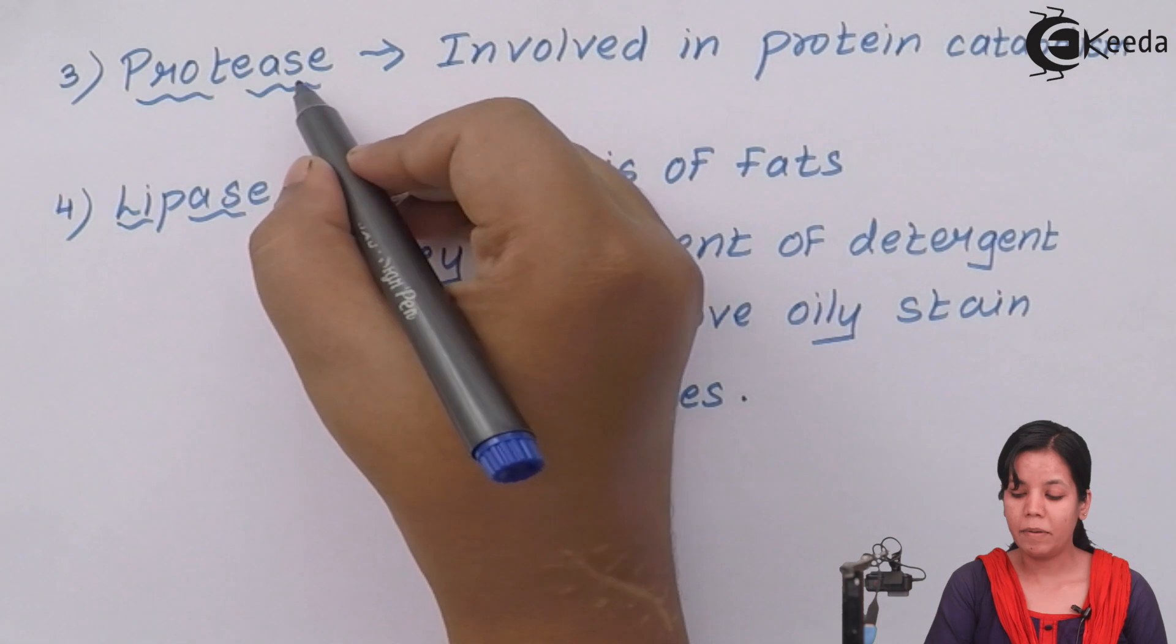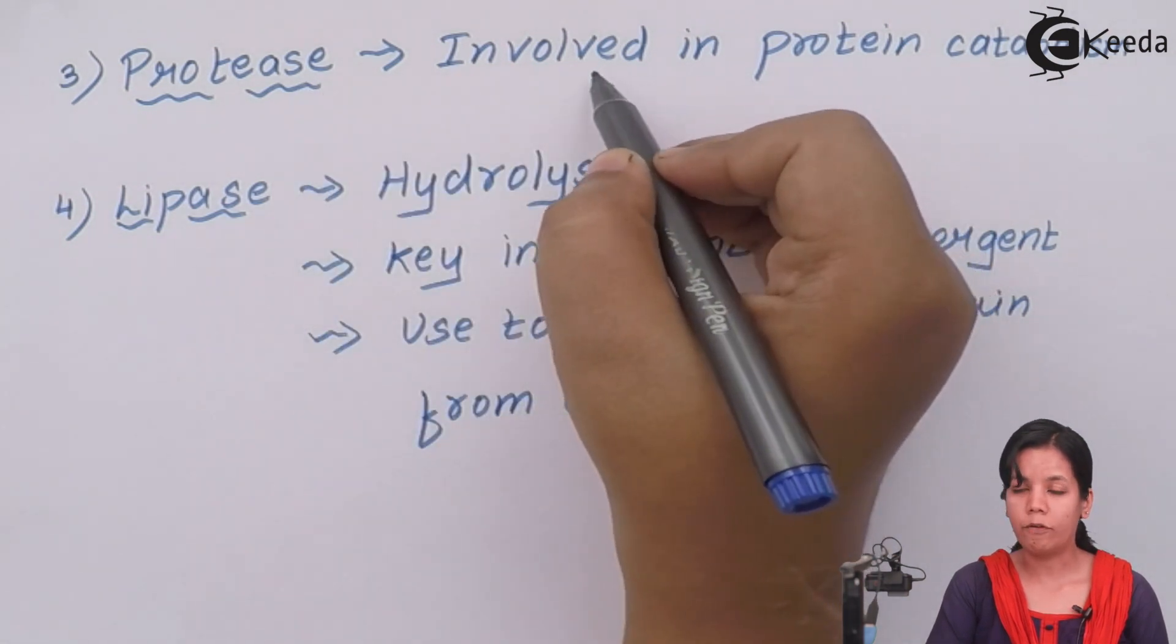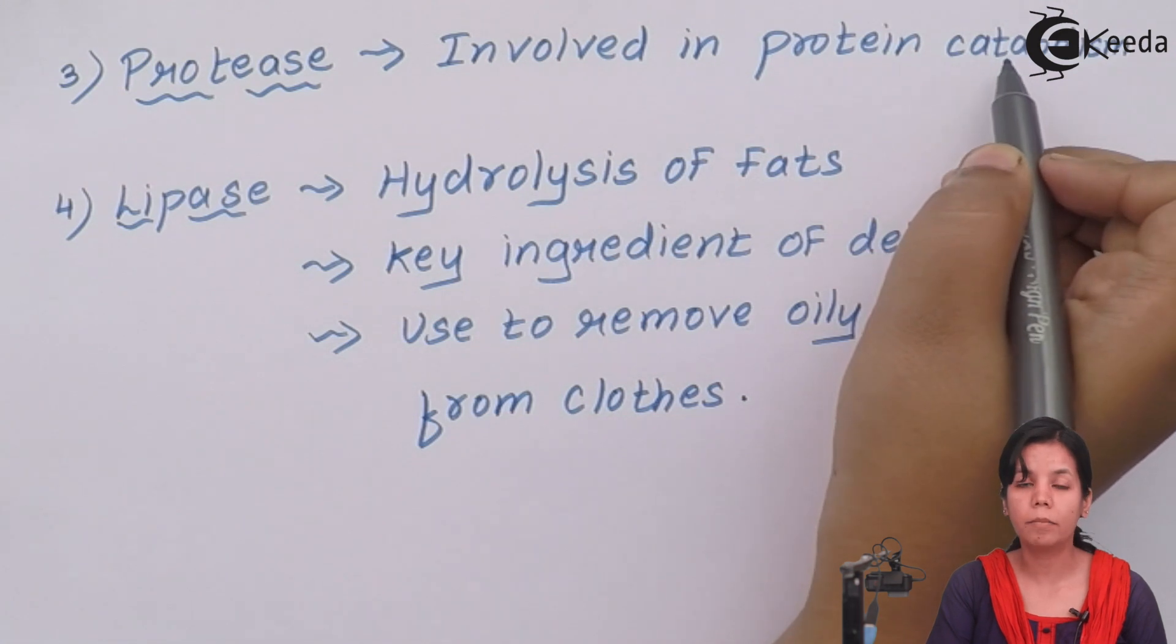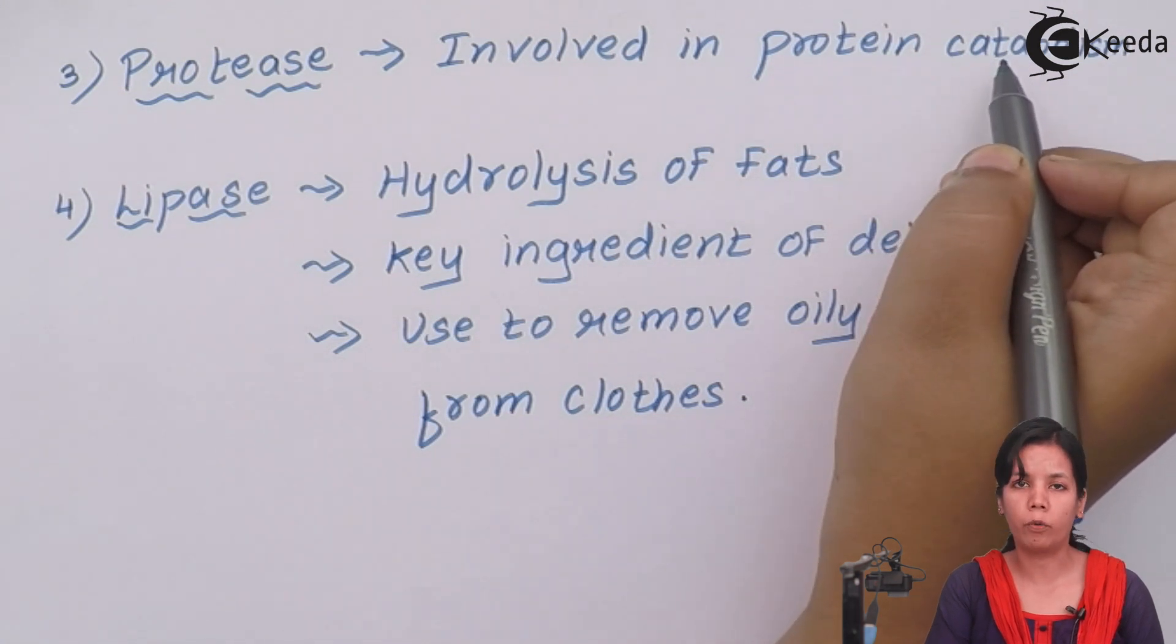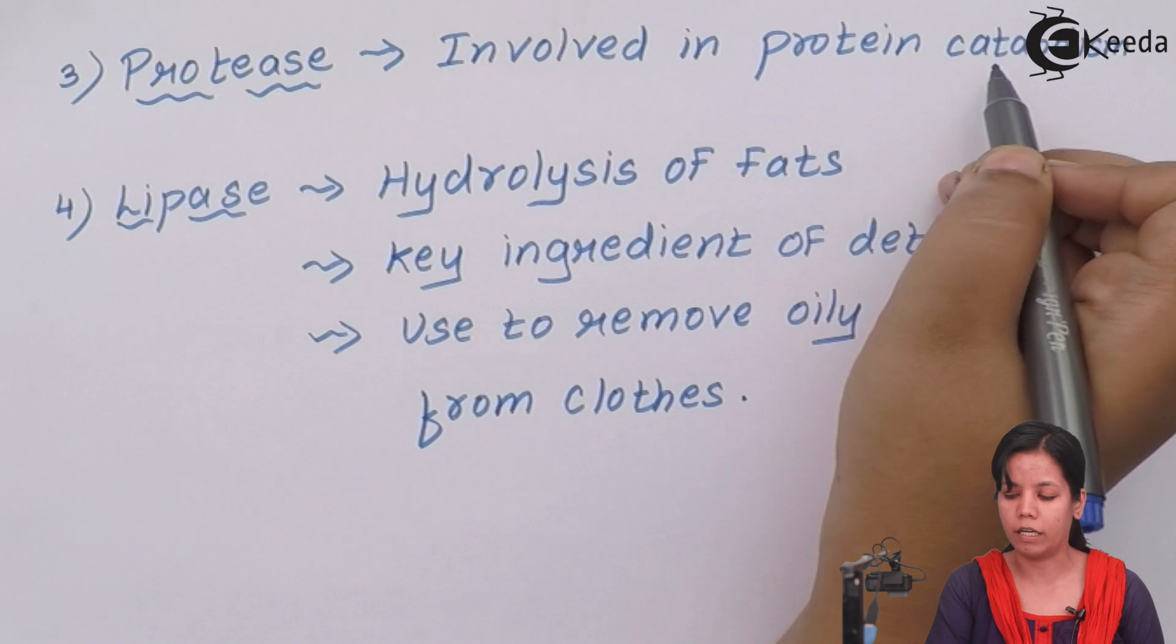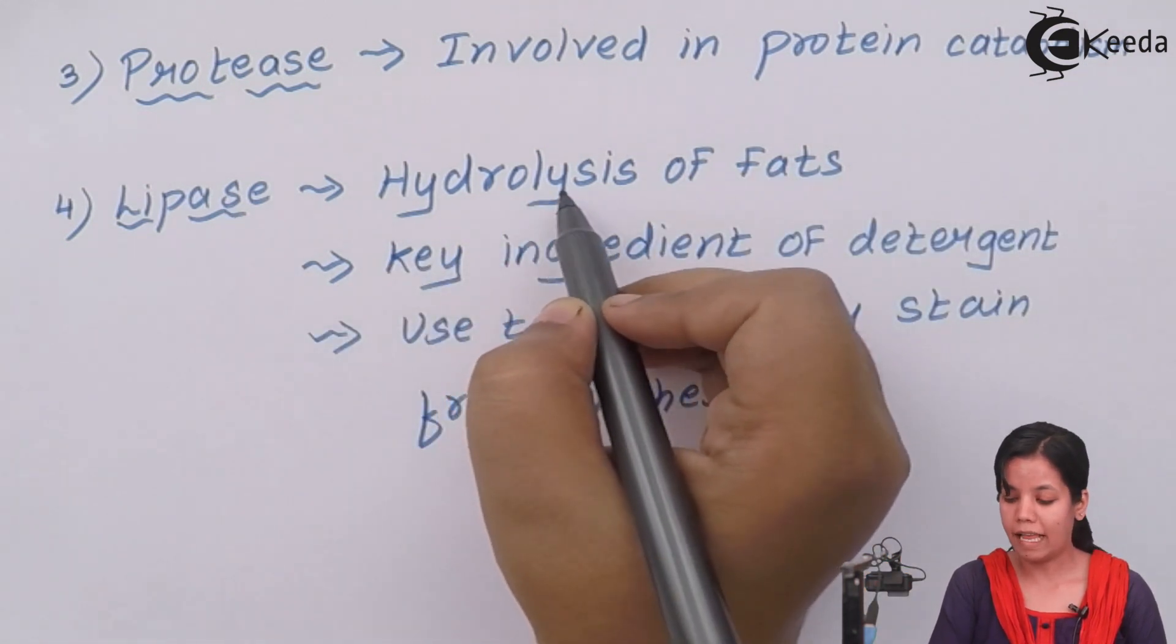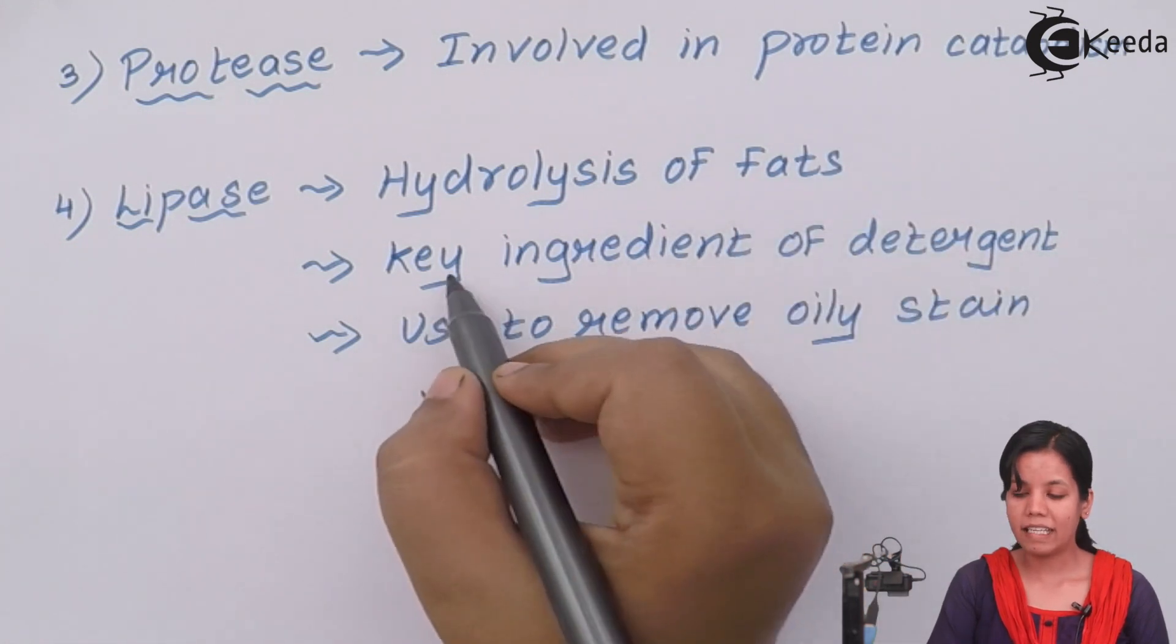The next enzyme is proteases that is involved in protein catabolism. When I say protein catabolism it means breaking down of protein or deamination of protein.